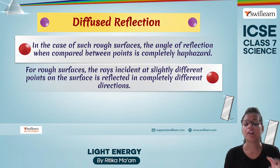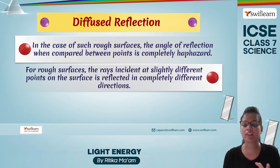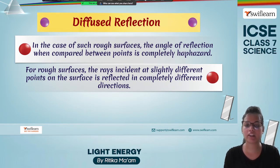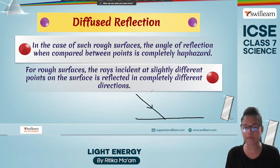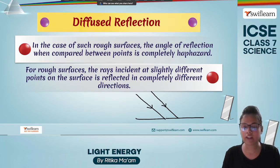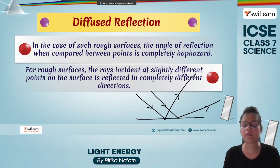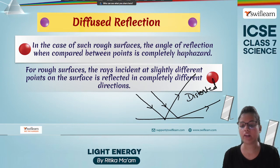The rays incident at slightly different points on the surface are reflected in completely different directions — not following any particular pattern — and this leads to a distorted image.